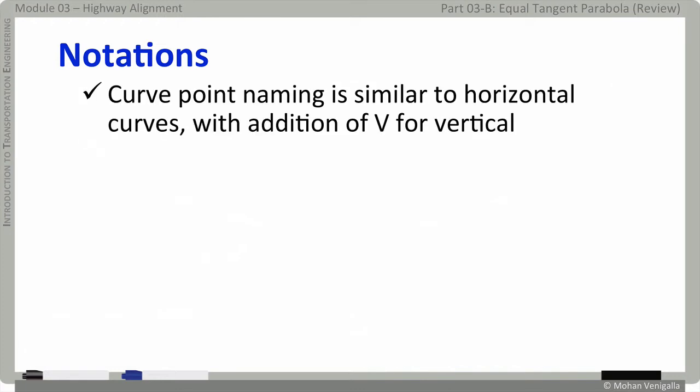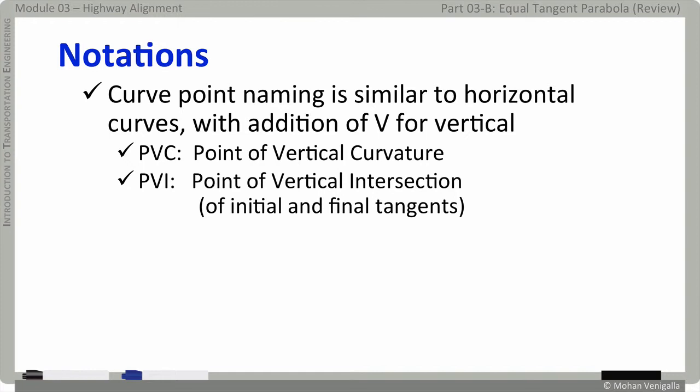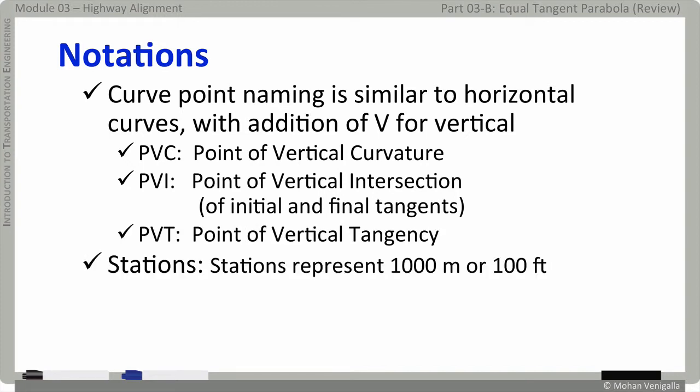Here are some of the important notations which you should know as your second nature. Curve point naming is similar to horizontal curves with an addition of V for vertical right in the middle. For instance, in horizontal curves, PC is point of curvature. In vertical curves, it will be point of vertical curvature or PVC. Similarly, point of vertical intersection in horizontal curves, it will be point of intersection only. Point of vertical tangency. Stations, it is the same. Notations of stations, we all know.